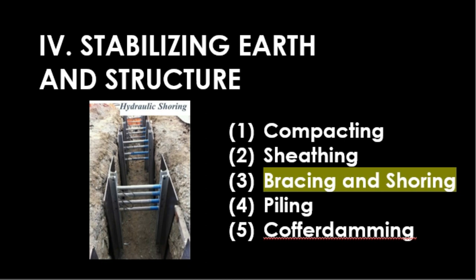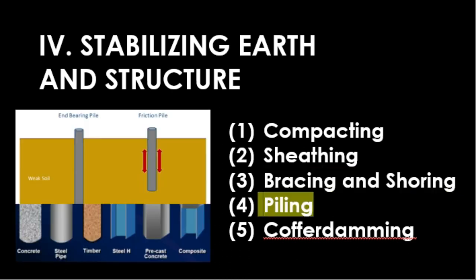Bracing and shoring are processes usually used with sheathing. A brace is put in horizontally between the sheathing panels and is used in narrow excavation. Shoring is placed diagonally against the excavation walls or sheathing panels, used in wider excavation, and is held by stakes at the bottom.